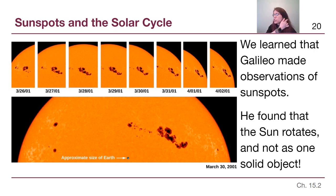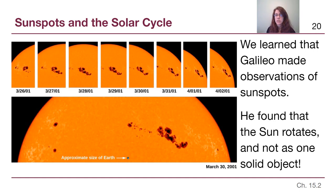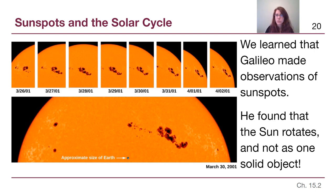He was able to trace those sunspots from one day to the next to see that the sun rotates on its own axis, the same way the earth rotates. What's more interesting, though, is that the sun does not rotate as a single solid object the way the earth does. Instead, if we look at how the sunspots move, around the sun's equator they move faster, and around the higher latitudes, further from the equator, they move slower.